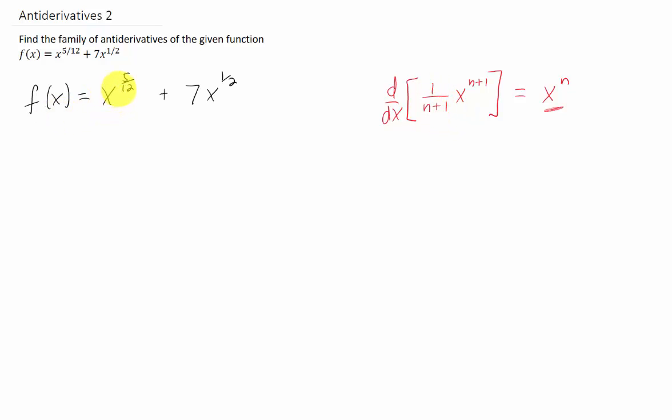We have a term here that is x to the 5 twelfths. So if we want to find the antiderivative of that term, denoted capital F of x, what we have to do is take that x to the 5 twelfths and add 1 to that power. I'm going to give myself just a little bit of space here, and we have to divide by that new power.